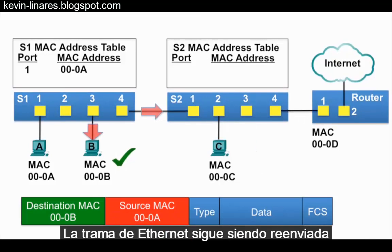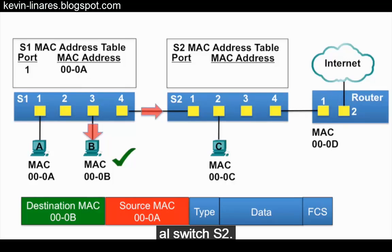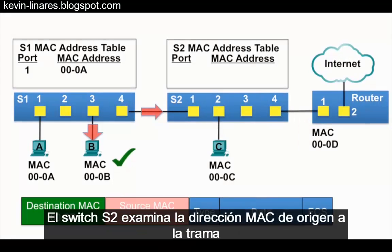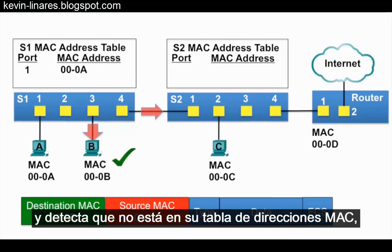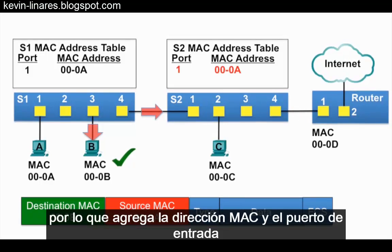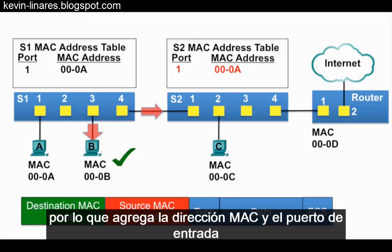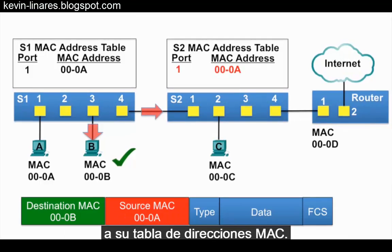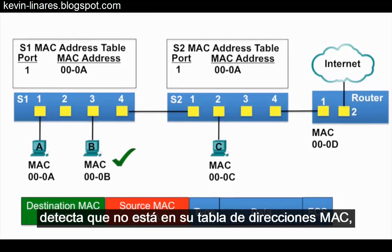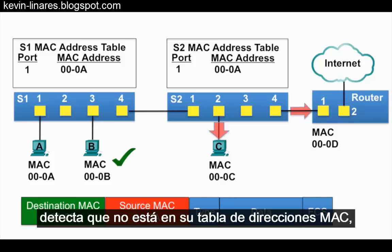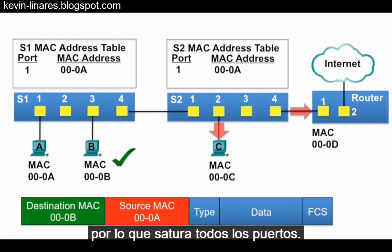The Ethernet frame continues to be forwarded to switch S2. Switch S2 examines the source MAC address of the frame and notices it is not in its MAC address table, so it adds the MAC address and the incoming port to its MAC address table. Next, switch S2 examines the destination MAC address, notices that it is not in its MAC address table, so it floods it out all ports.